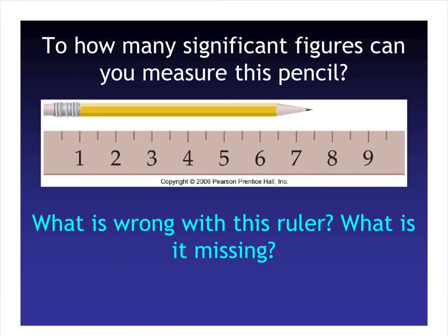On this ruler, to how many significant figures can you measure this pencil? Looking at the pencil, we can see it measures out to about 7.5 on the ruler. We know the 7 marking and the 7.5 marking, and we can estimate one more digit beyond that. So somewhere in that area, we would be able to estimate at least one more number.